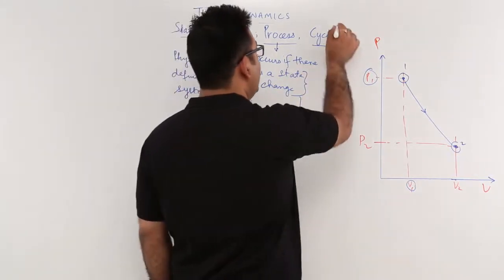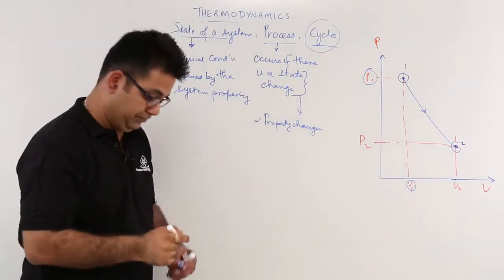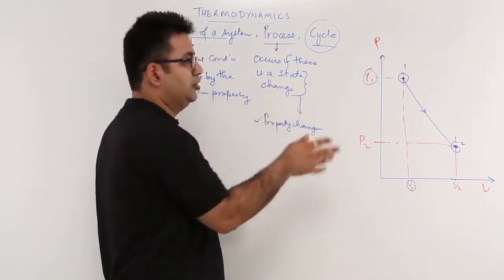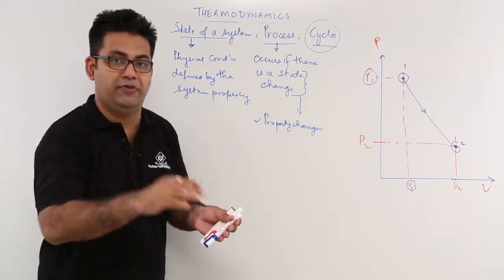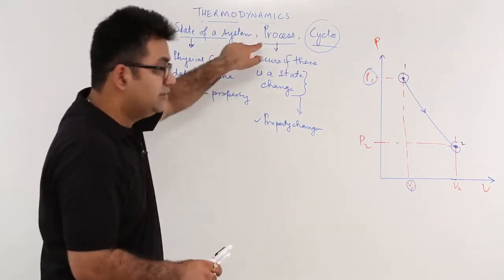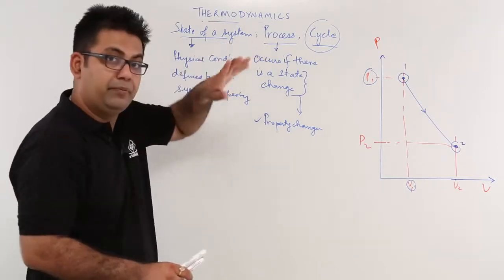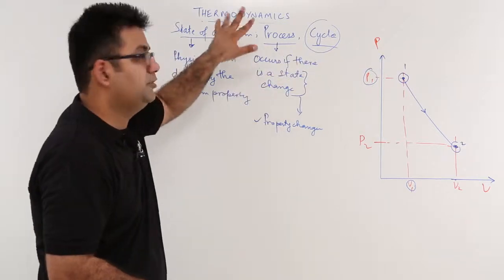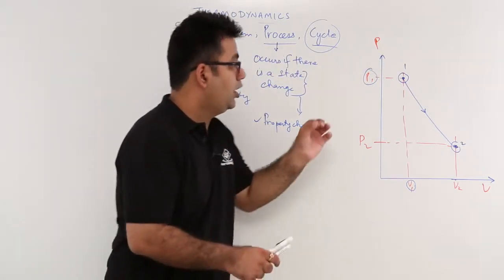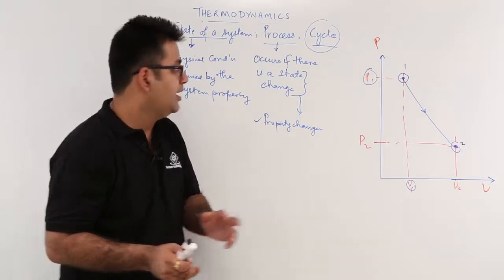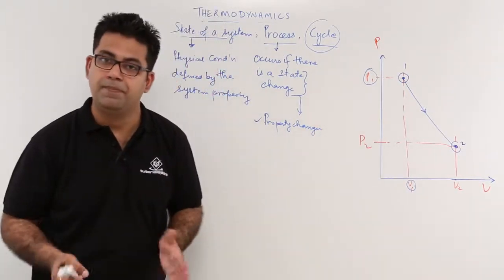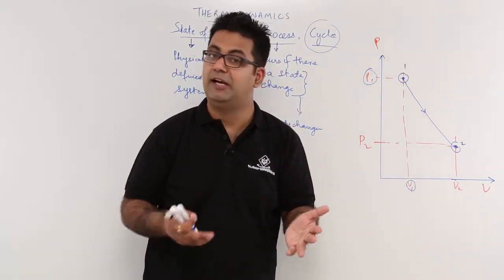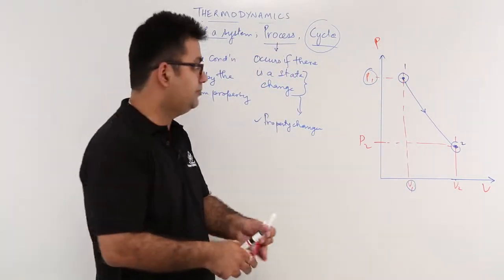Now we focus our attention on what is a cycle. Cycle is linked to process, so let us build a chain. Process comes from the understanding of the state of a system, and cycle comes from the understanding of the process. Whenever there is a state change happening, there will be a process happening. From state 1 to state 2, you have process 1-2.